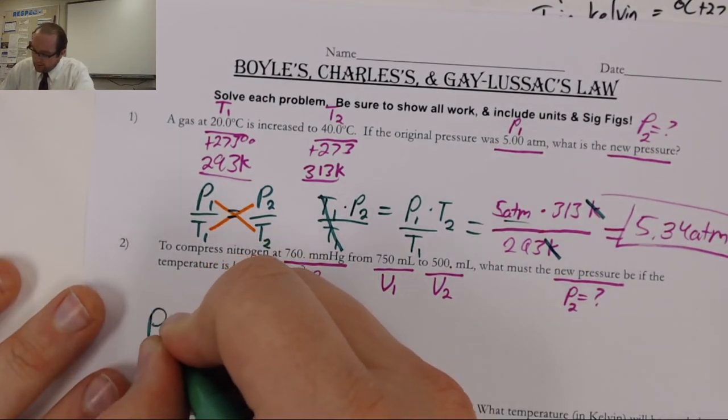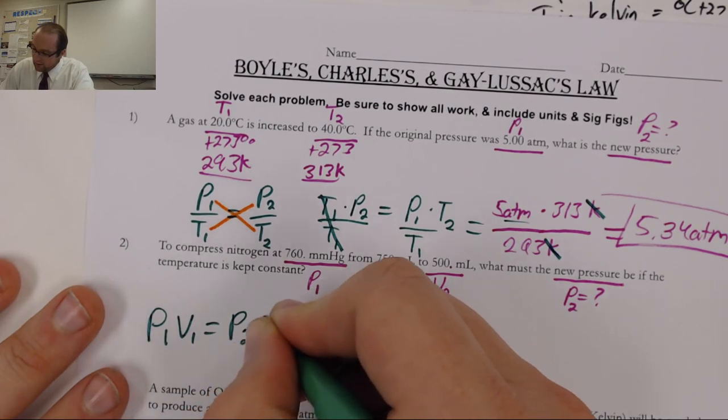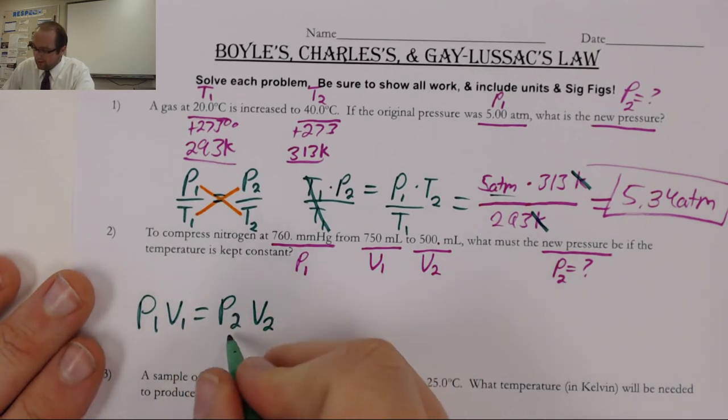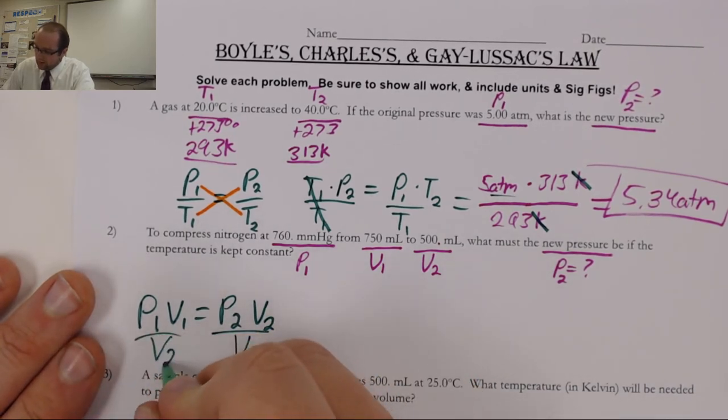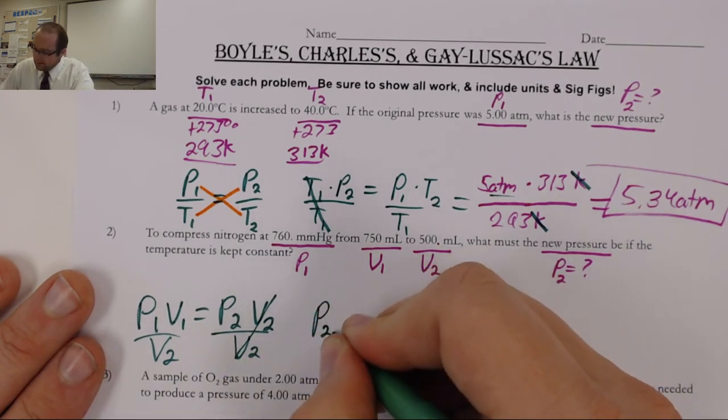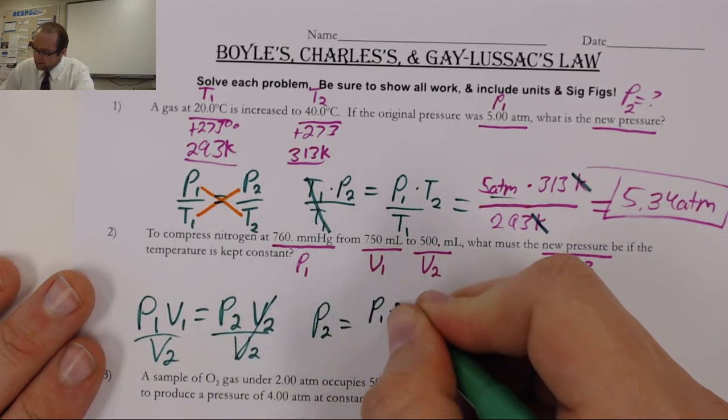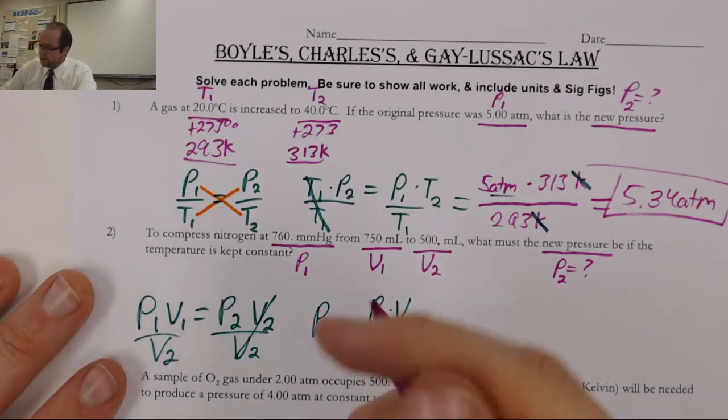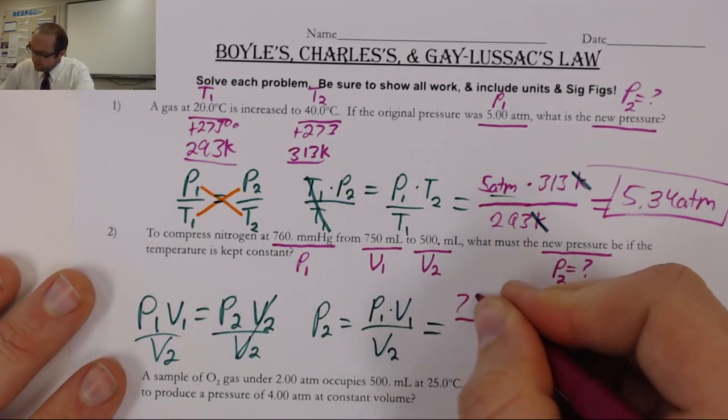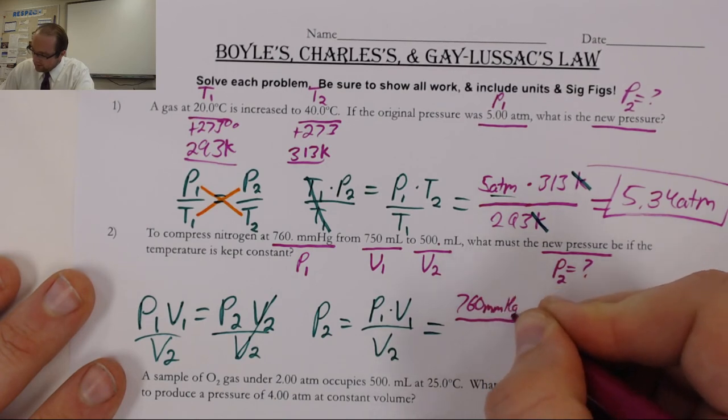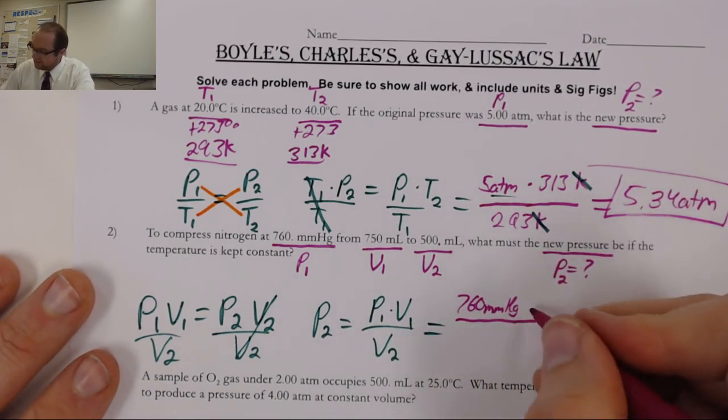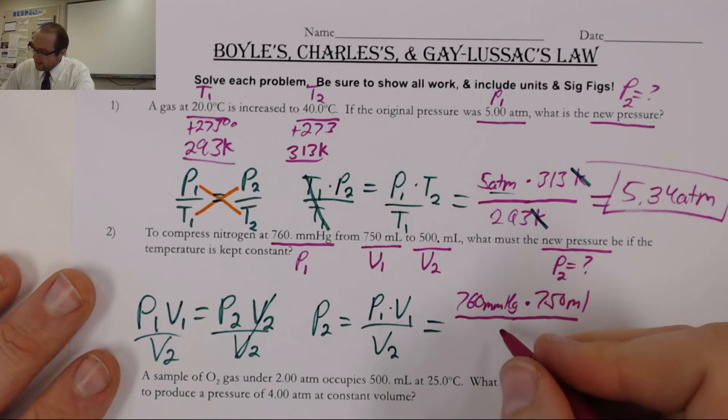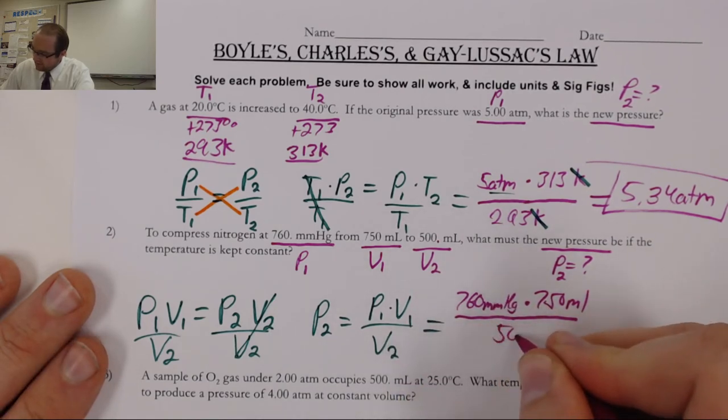So, let's go ahead and write that equation down. Good thing about Boyle's is we don't need to use any weird Kelvin stuff. We just have pressures and volumes, P1V1 equals P2V2. And I want to find P2. So, all I'm going to do is just divide over V2. So, this side cancels. And P2 is going to be equal to P1 times V1 over V2.